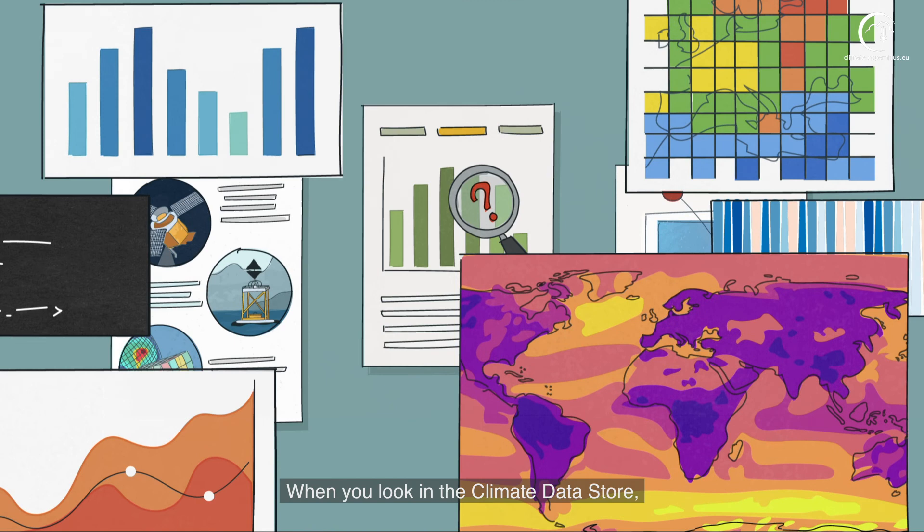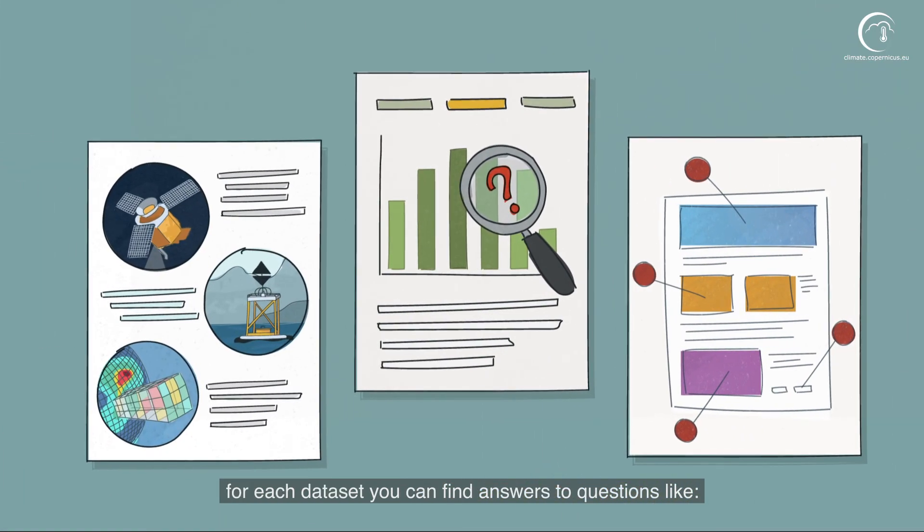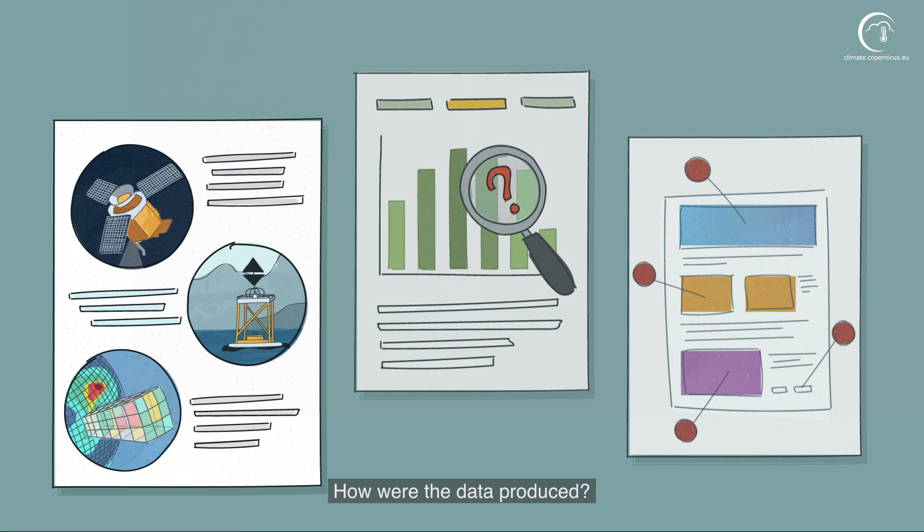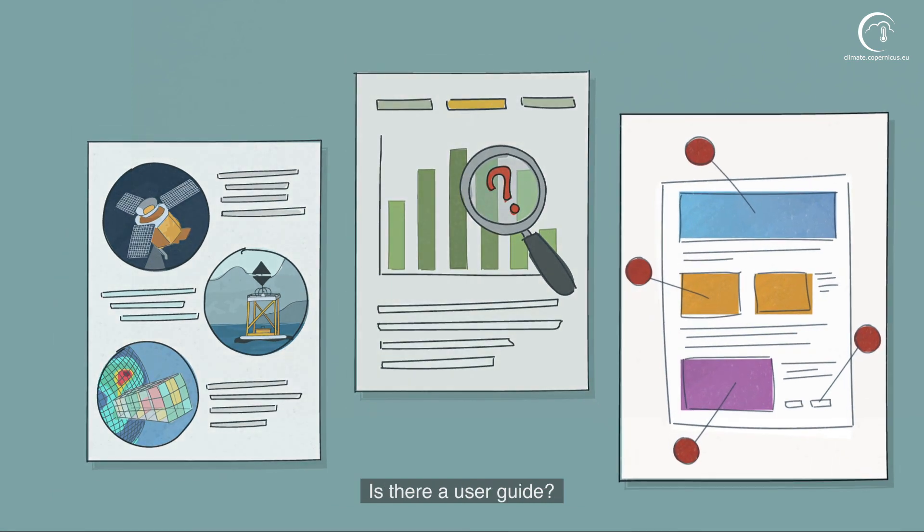When you look in the Climate Data Store, for each data set you can find answers to questions like: How were the data produced? Are uncertainties in the data documented? Is there a user guide?